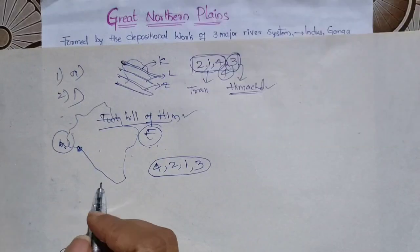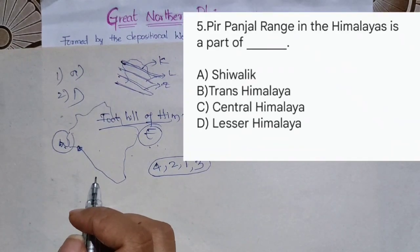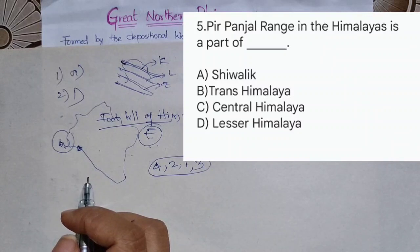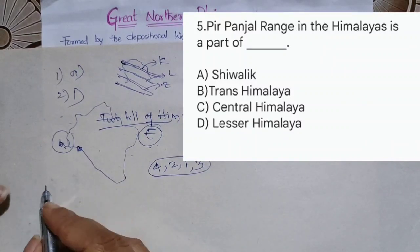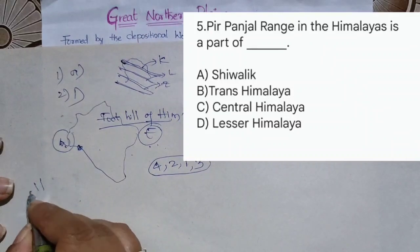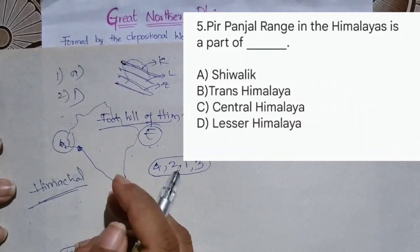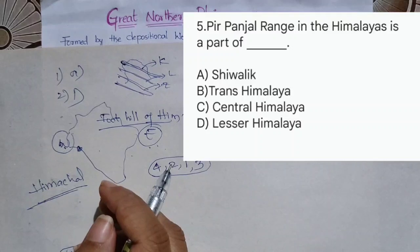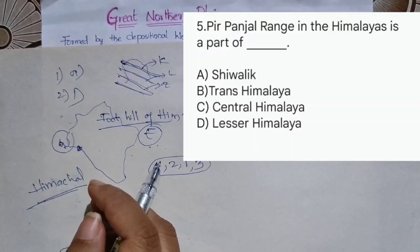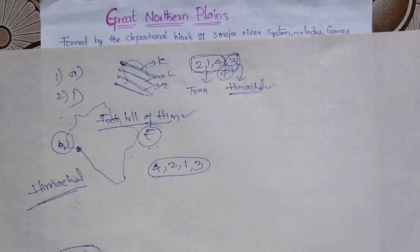The next question: Pirpanjal Range in Himalayas is a part of which range? The options include Lesser Himalayas or Middle Himalayas. Pirpanjal Range was a part of Lesser Himalayas, which is also called Middle Himalayas.